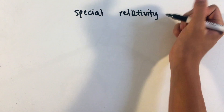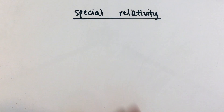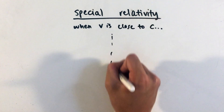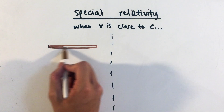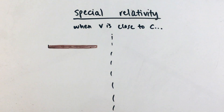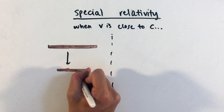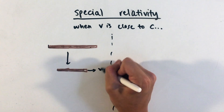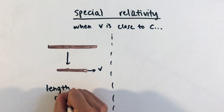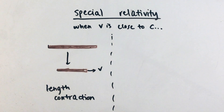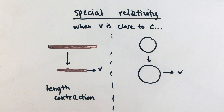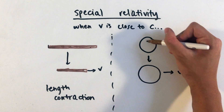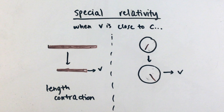A completely different topic that only requires a qualitative understanding for this course is special relativity. Essentially, when objects move at speeds that are near the speed of light, or C, space and time are warped. Namely, moving objects appear shorter through a phenomenon called length contraction, while moving objects experience time slower through a phenomenon known as time dilation.